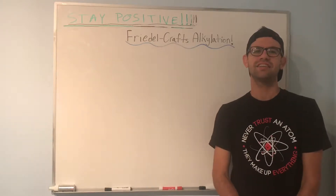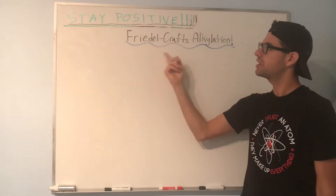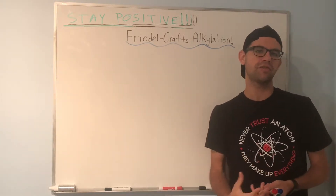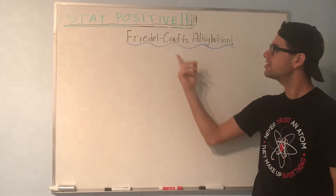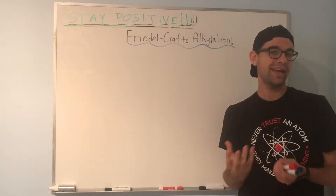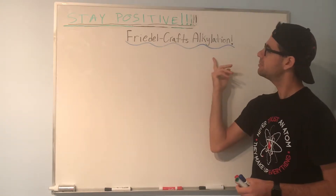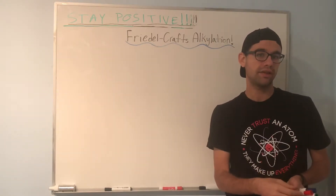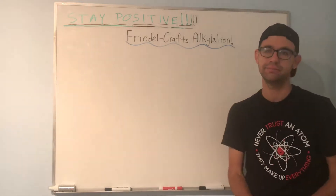Hey YouTube, how's it going? YakScience here with another OCHEM video. Today we're going to be talking about Friedel-Crafts alkylation, which is a specific type of electrophilic aromatic substitution reaction. In this type of reaction, we're going to be adding an alkyl group onto an aromatic ring like benzene. I want to go over the general mechanism, how we prepare our strong electrophile, and how we add the alkyl group onto a benzene ring.